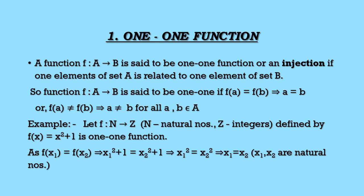This implies x₁ = x₂, since x₁ and x₂ are natural numbers. If x₁ and x₂ were integers, then x₁² = x₂² may not imply x₁ = x₂. For example, 2² = 4 and (−2)² = 4, but 2 and −2 are not equal. So this function is one-one because the domain is the natural numbers.